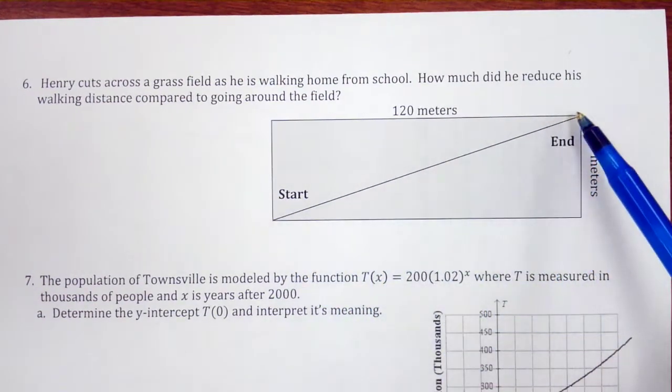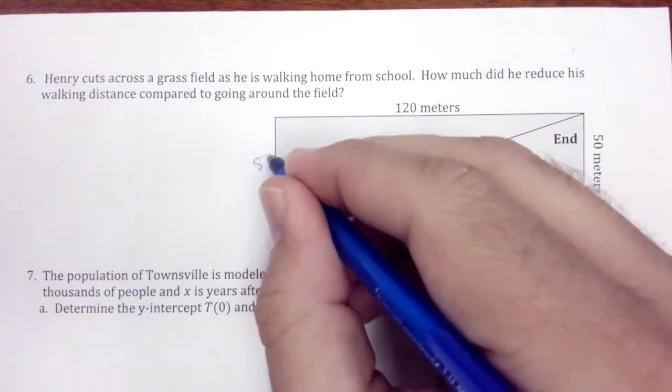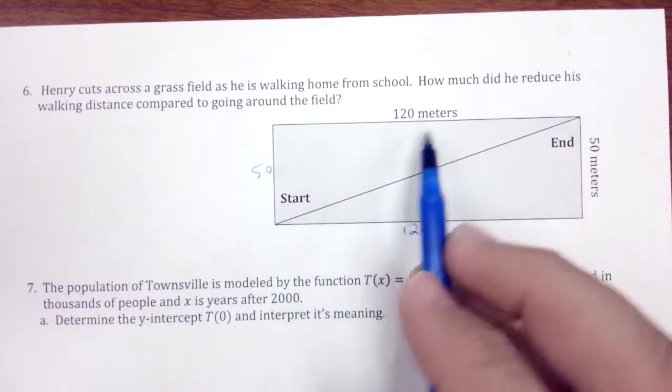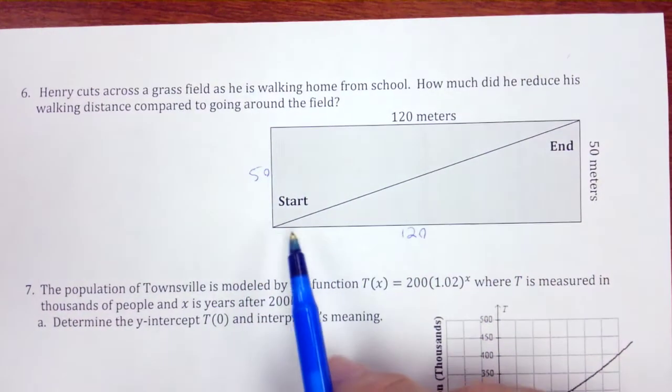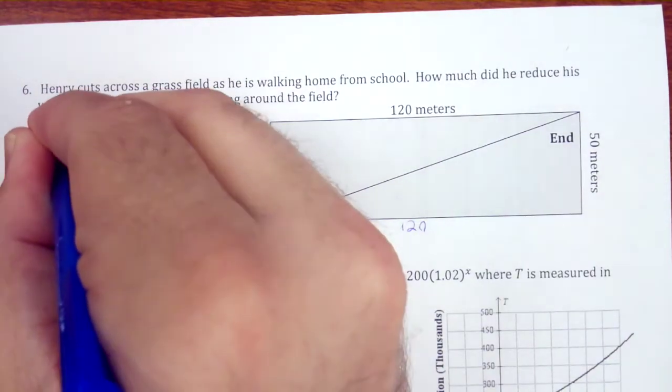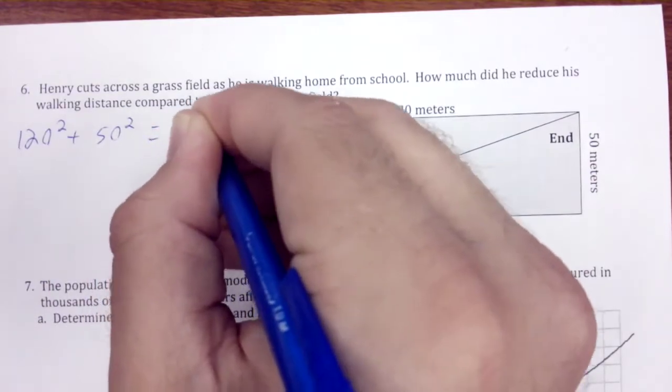We need to figure out what this length is because we know that this is 120. This is 50. If he's going to walk all the way around here, then he walks 170. We need to figure out how much he walks here. So, 120 squared plus 50 squared is equal to c squared.